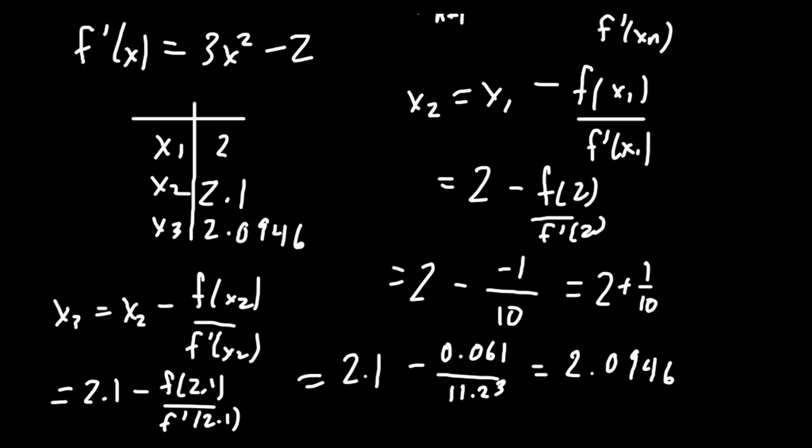And so that's what we would say here for x3, 2.0946. And so, you know, these numbers are kind of close and they're going to, every time you do this process, you're going to get one step closer, one step closer, one step closer to computing the solution to this equation.